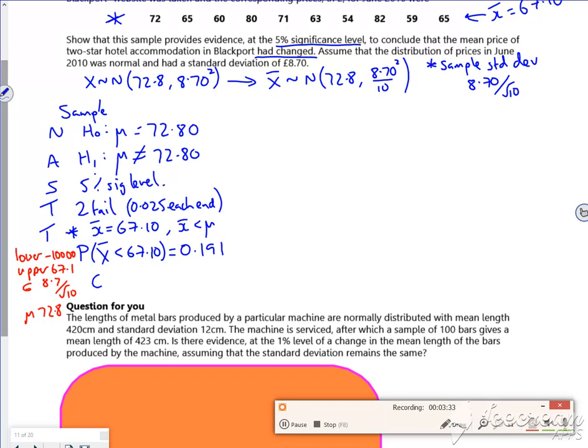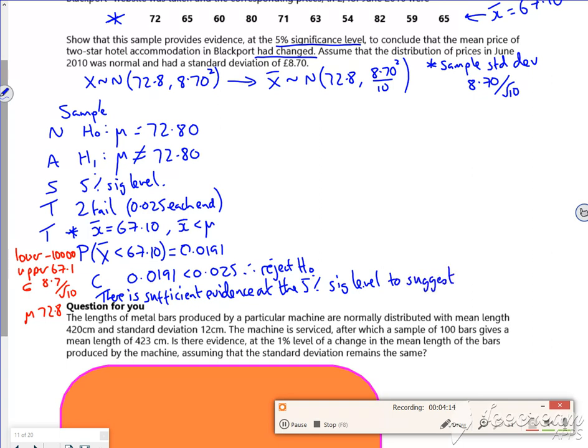Then I'm at a point now where I can do my conclusion. So for my conclusion, remember I'm looking at 0.0191. So in terms of a conclusion, 0.0191, the bottom 1.9% is less than 0.025. Therefore I reject H₀ and there is sufficient evidence at the 5% significance level to suggest that the price has changed.